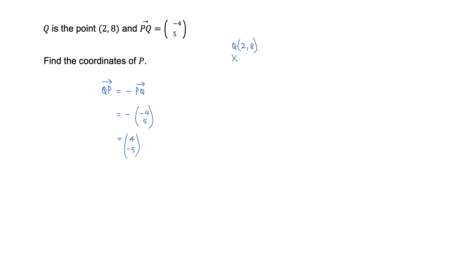So starting from point Q, we have to move four in the x direction and negative five in the y direction. And that will give us point P.